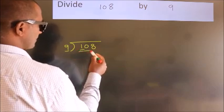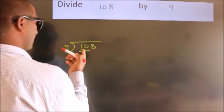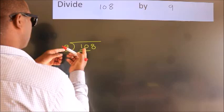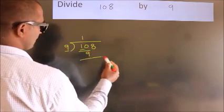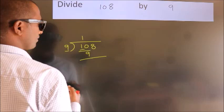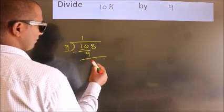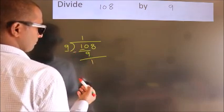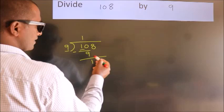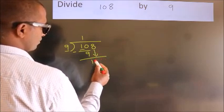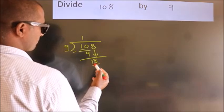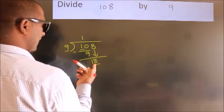A number close to 10 in the 9 table is 9, once 9. Now we should subtract. We get 1. After this, bring down the beside number, so 8 comes down. So 18. When do we get 18 in the 9 table?